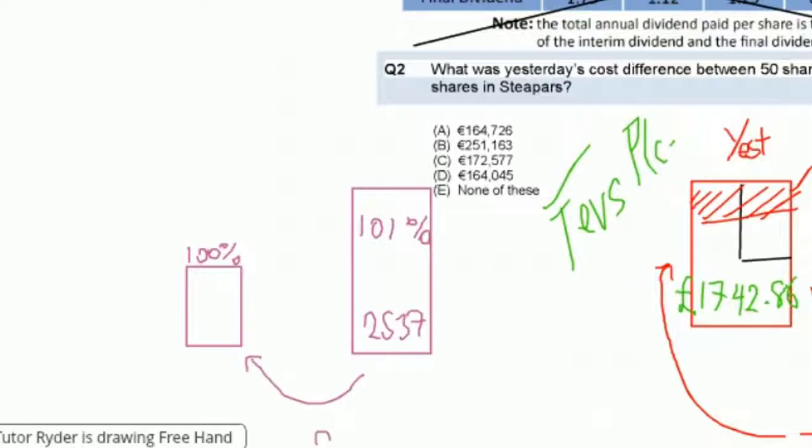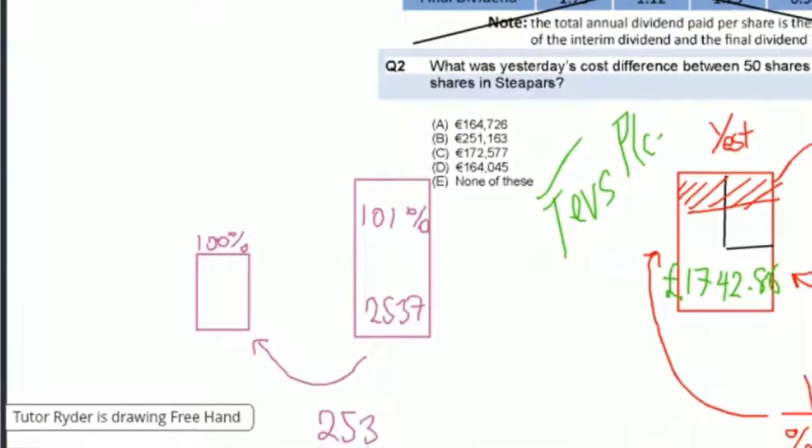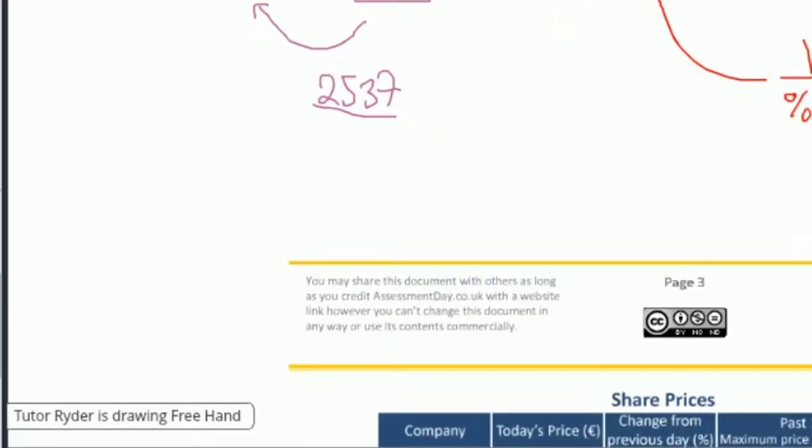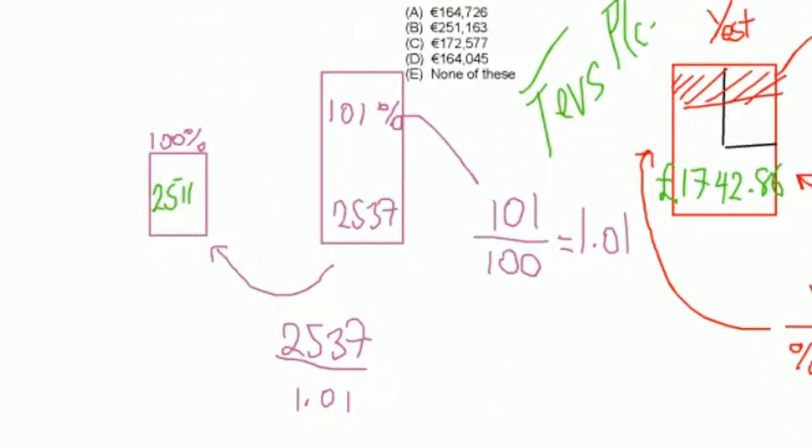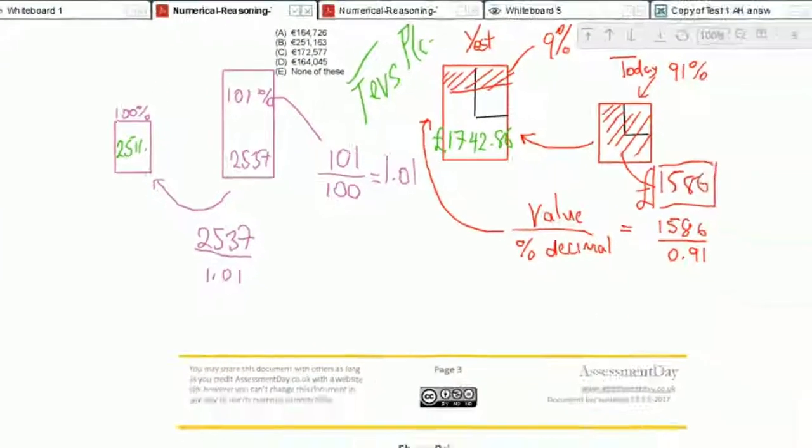We take the value, which is 2,537. And we divide it by the decimal fraction, or the decimal percentage, I should say, which is going to be 1.01. If we do that, we get an answer of 2,511 and 88 pence.